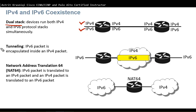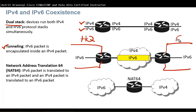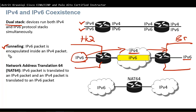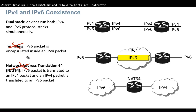Another transitioning method is tunneling, where we encapsulate an IPv6 packet inside an IPv4 packet. For example, if headquarters and a branch are both running IPv6 but the ISP is still using IPv4, we can encapsulate the IPv6 packet inside an IPv4 packet and de-encapsulate on the other side. Alternatively, we can use NAT64 to translate between IPv6 and IPv4 in either direction. However, tunneling and translation should only be used as transitioning methods — the goal is to move everything straight to IPv6.